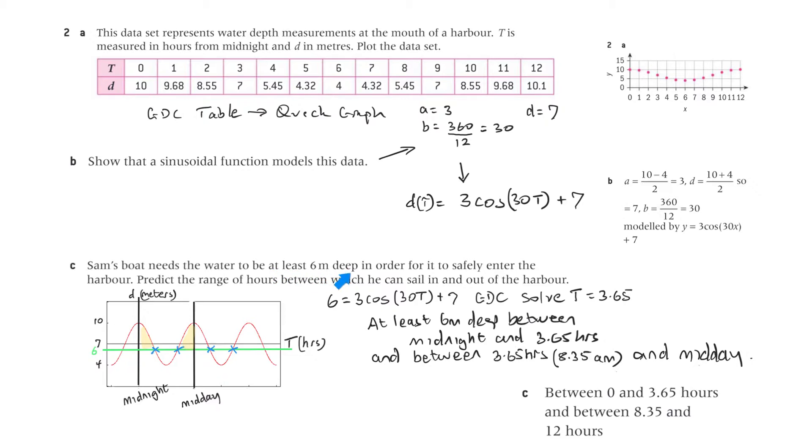And c, Sam's boat needs the water to be at least 6 metres deep in order for it to safely enter the harbour. So I predict the range of hours between which he can sail in and out of the harbour. So I've put this in a diagram here. That's my midnight there. So in the back of the book, that would be that point there. And then you can see from midnight to this point here, we solved for t. We knew it was going to be 6 metres deep, so 6 metres on the left side, and we have to find t. GDC solve, I found t is 3.65. So that would be 3.65.